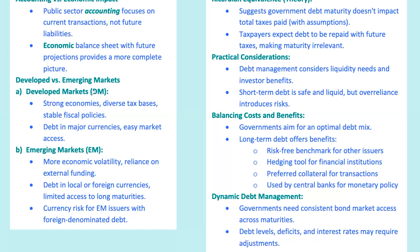Developed markets (DM) are your stable economies like the U.S., Germany, and Japan. They issue debt in major reserve currencies like USD, EUR, and JPY, and have unrestricted access across maturities. Emerging markets (EM) are more volatile, with governments often facing economic instability. EM sovereign debt might be issued in domestic or foreign currencies, which can shift currency risk to the issuer's ability to generate foreign currency.